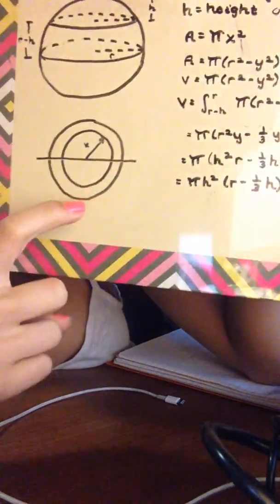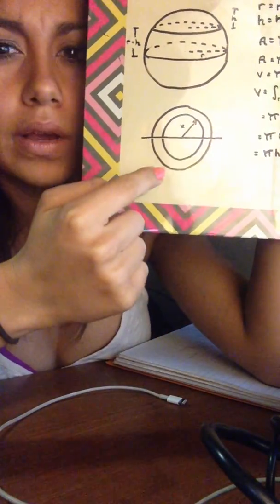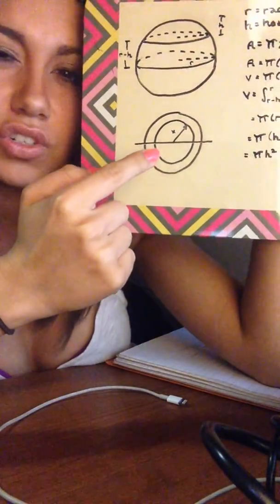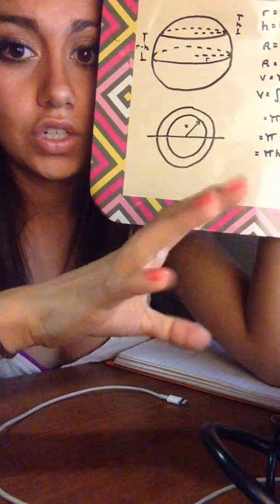Pi times x squared, where x is your radius and it's changing each time. So this is what your cross-sectional area would look like, and then x is the radius that's changing.